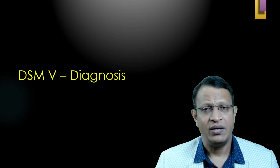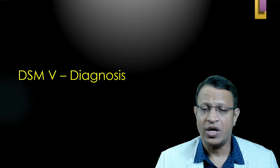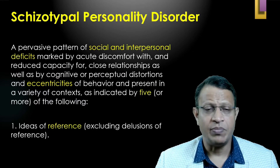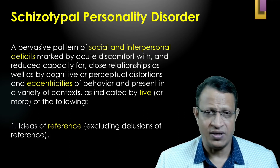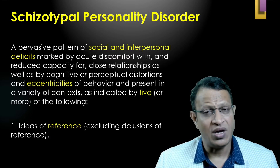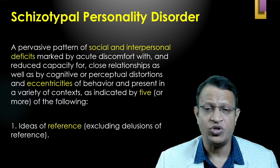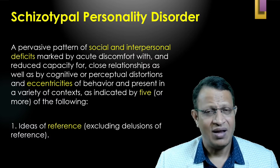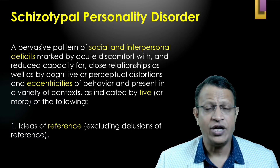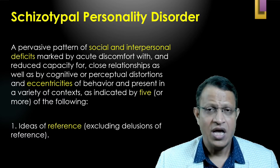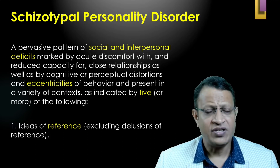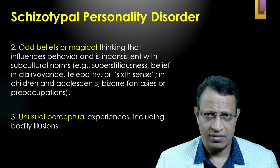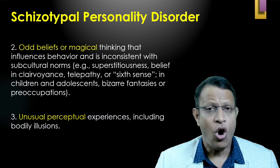Let's look at the DSM-5 diagnostic criteria for schizotypal personality disorder. There should be a pervasive pattern of social and interpersonal deficit marked by acute discomfort with and reduced capacity for close relationships, as well as cognitive and perceptual distortions and eccentricities in behavior, present in most contexts of life. They should have at least five of the following symptoms. First and foremost is ideas of reference — not delusions, only ideas.